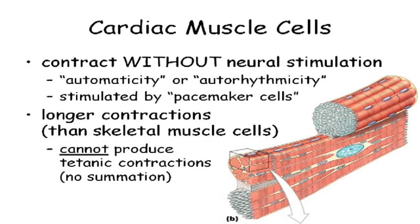Remember we said that if you stimulated a skeletal muscle cell fast enough, you could make it go into complete tetanus? You cannot do that with your heart — which is a good thing, because if you could, your heart would stop and all blood flow would stop. We'll talk about exactly why later: a twitch of a heart muscle cell lasts much longer than a twitch of a skeletal muscle cell. You cannot summate or tetanize a cardiac muscle cell.